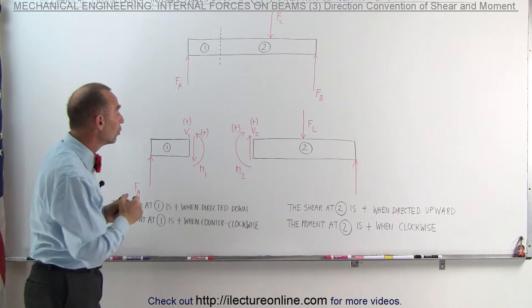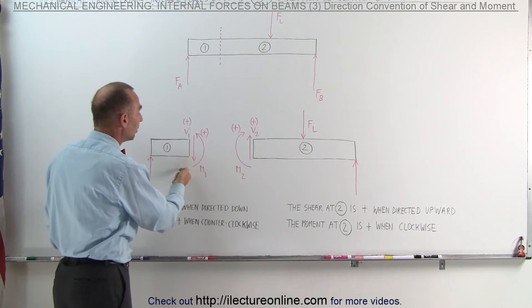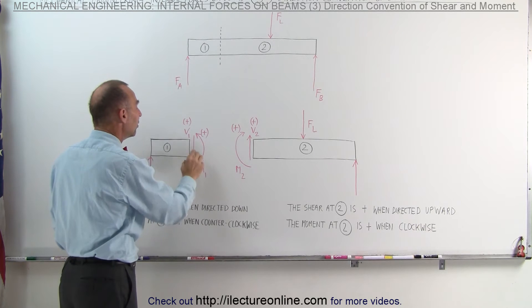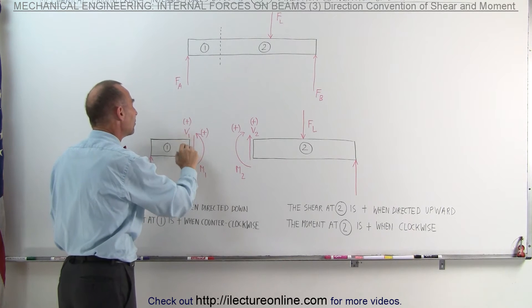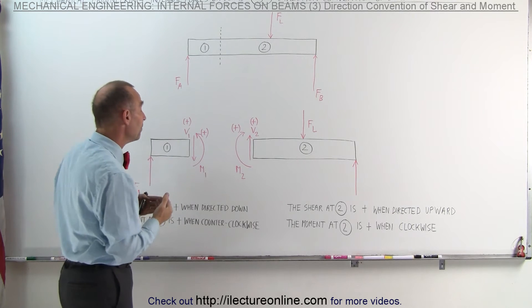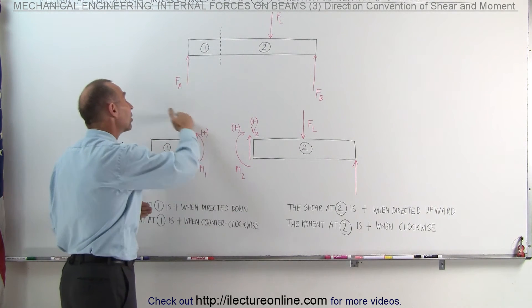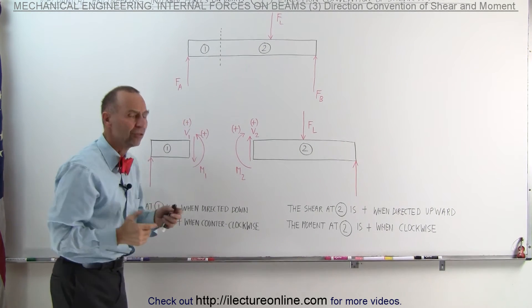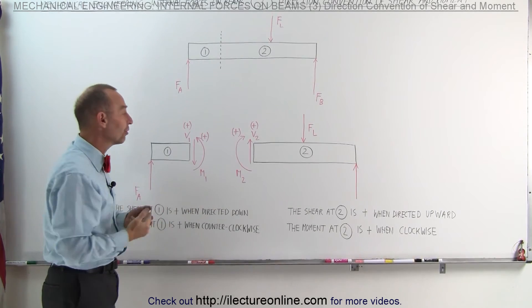Also, when it comes to the moment, notice when on section 1, the moment is clockwise. And this is the internal moment inside the beam, trying to oppose the moment caused by the external force on the beam. When that moment is counterclockwise, it's positive. So that's according to the normal convention of the moment.